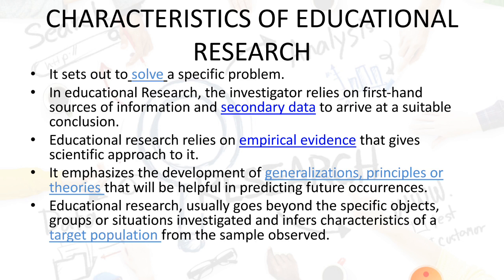Educational research emphasizes the development of generalizations, principles, and theories that will be helpful in predicting future occurrences. For example, research in child development found that children under three years of age, if admitted to school, cannot understand properly because at that age they need motherly love — teaching science at that stage can create problems for them.